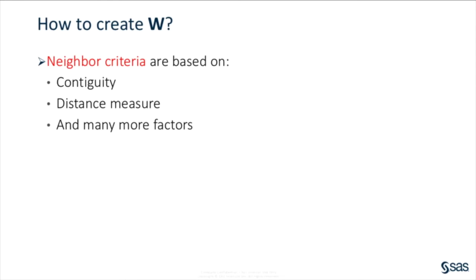Next, we discuss how to create a spatial weight matrix W for spatial econometric modeling. The spatial weight matrix W describes neighbor relationships among observation units in the data. In its simplest form, the W matrix is a binary matrix, with one to represent a neighbor relationship between two units and zero otherwise. To determine if two units are neighbors, we need some neighbor criteria. In practice, neighbor criteria can be based on contiguity, distance, and many more factors. We will show examples of how to create a spatial weight matrix based on contiguity and distance criteria.